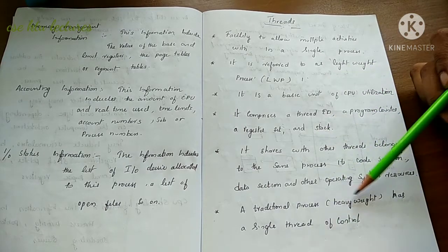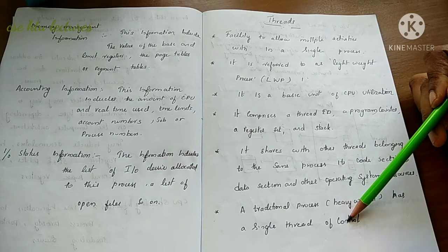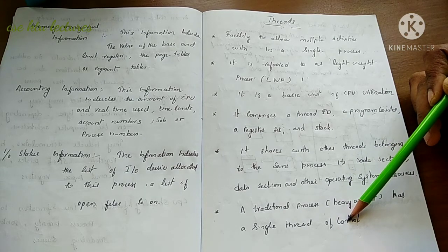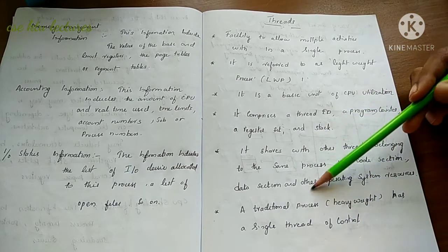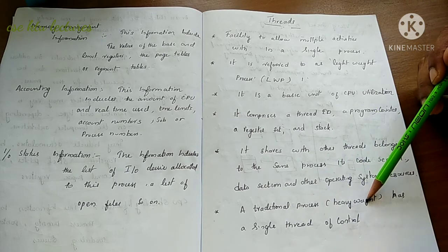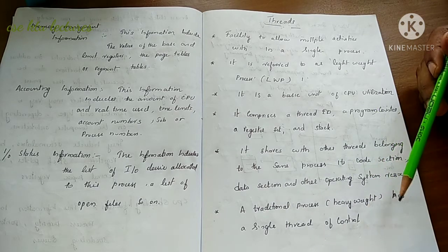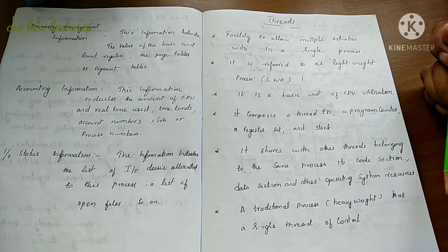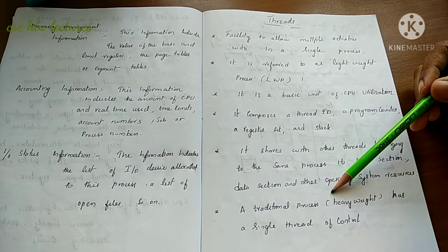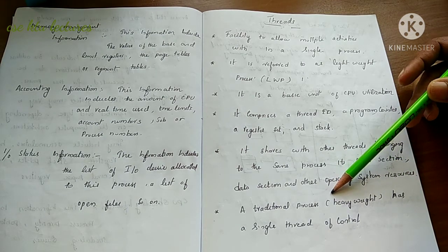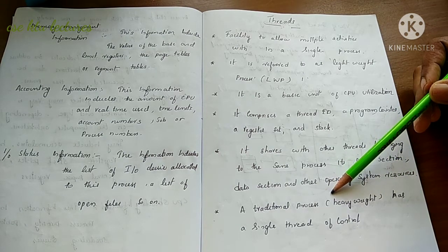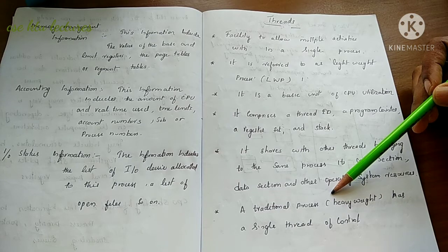A traditional process, also called a heavyweight process, has a single thread. Traditionally, a process was used with a single thread, which is why it is called heavyweight. In contrast, a lightweight process has multiple threads. Now we are using multi-threaded processes.